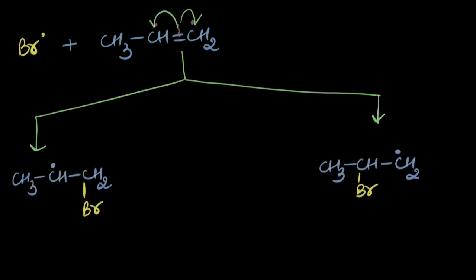Either the bromine attaches to the terminal carbon and we get this radical. Or it attaches to the central carbon and we get this radical. So which of the two radicals is more likely to be formed? The left one is a two degree radical while the right one is a one degree radical.